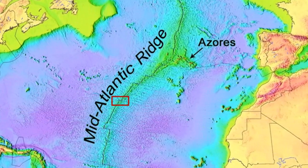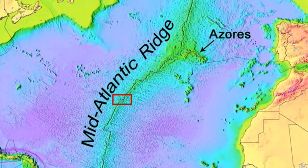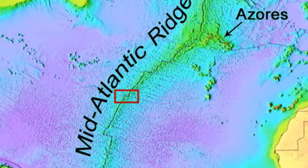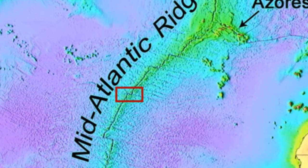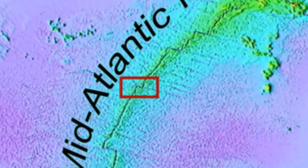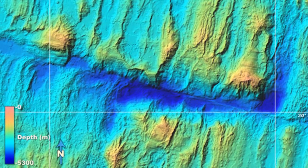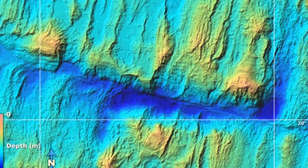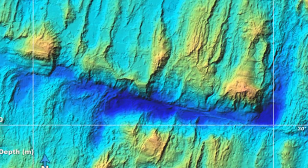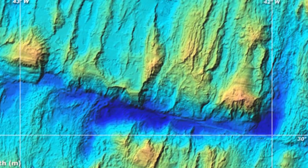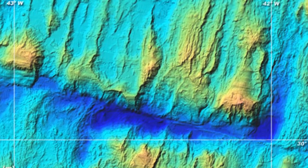In time, these continental margins will subside below sea level. Simultaneously, material eroded from the adjacent landmass will be deposited atop the faulted topography of the submerged continental margin. Eventually this material will accumulate to form a thick, broad wedge of relatively undisturbed sediment and sedimentary rock. Continental margins of this type are called passive continental margins. Because passive margins are not associated with plate boundaries, they experience little volcanism and few earthquakes.